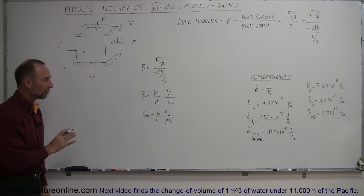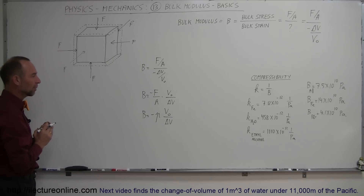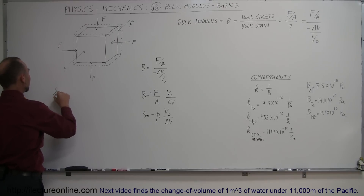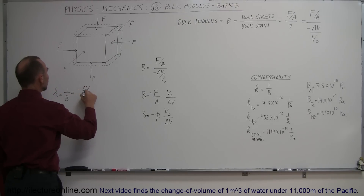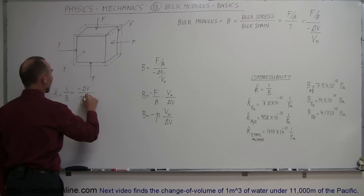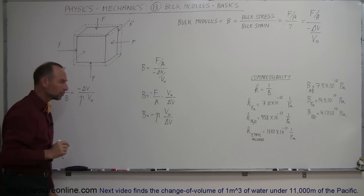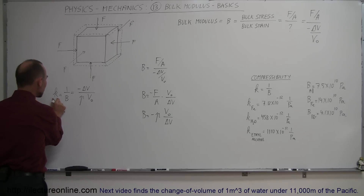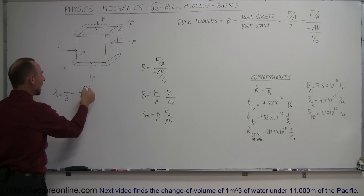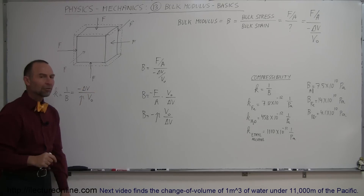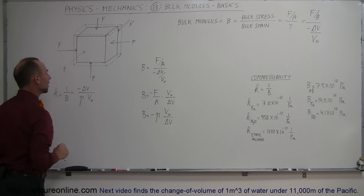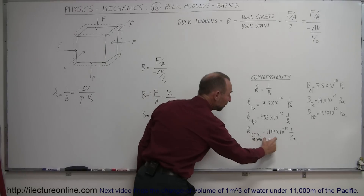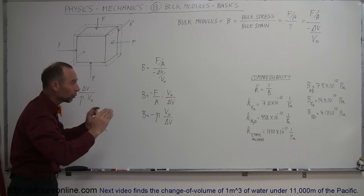Solving for compressibility, which equals 1 over the bulk modulus: compressibility equals negative ΔV divided by pressure times V₀ (the initial volume). So compressibility is a measure of how much the volume changes as a percentage of the original volume for a given amount of pressure. The bigger this number, the larger the expected volume change and the more the material will be compressed.